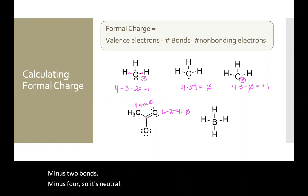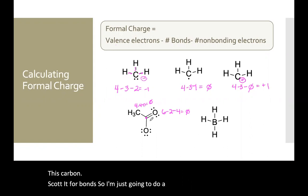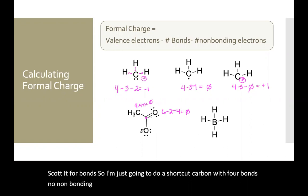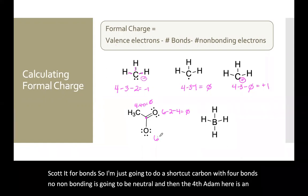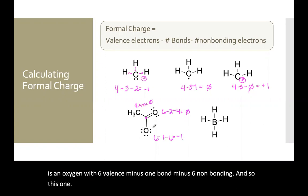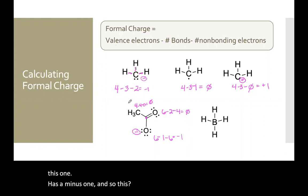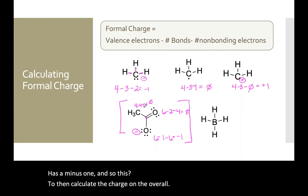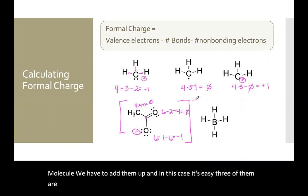This carbon has four bonds and no non-bonding — carbon with four bonds and no non-bonding is going to be neutral. The fourth atom is an oxygen with six valence, minus one bond, minus six non-bonding, so this one has a minus one. To calculate the charge on the overall molecule we add them up. Three of them are neutral and this one is minus, so this molecule has an overall minus one charge.